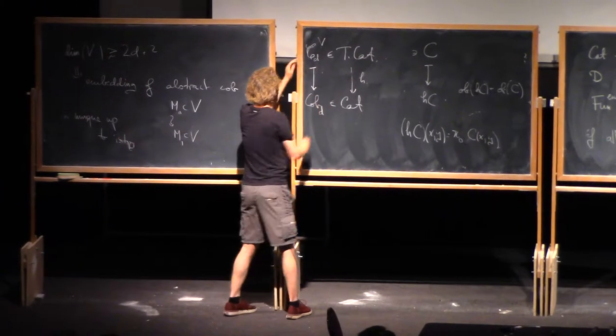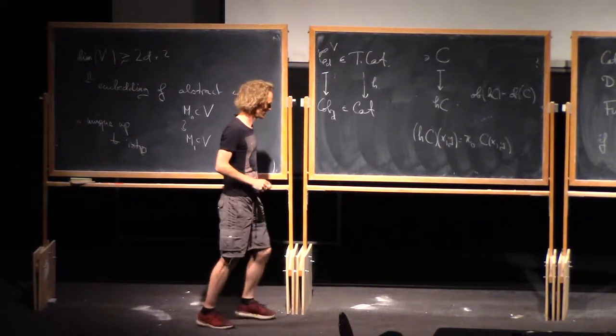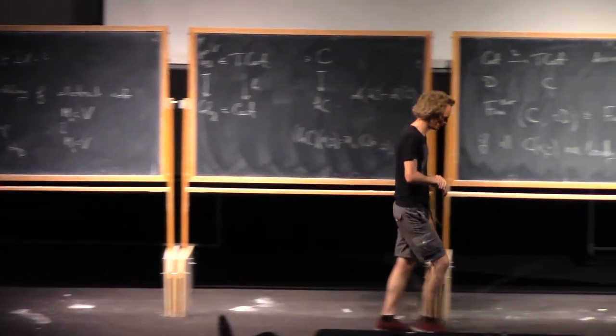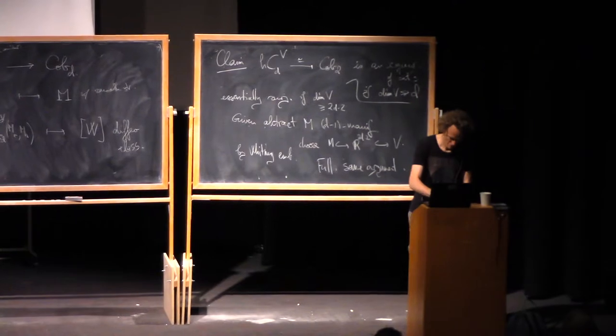And that means if you take pi_0 of the morphism spaces there, you precisely get the morphism sets there. That's the relationship. And that's the sense in which I've sort of lifted this thing. So under this construction, it goes to a category that's equivalent to cobD provided dimension of V is big enough. Or take the colimit.